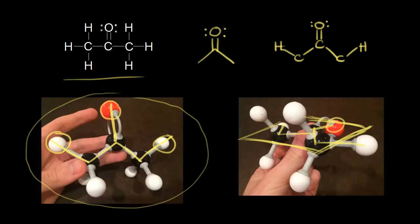Let's focus on the carbon in the center for right now. This carbon in magenta is sp2 hybridized, so we would expect trigonal planar geometry around that carbon — we would expect everything to be planar. The atoms connected to the carbon in magenta would be expected to be in the same plane. These carbons, these carbons, and this oxygen are all in the same plane due to sp2 hybridization.